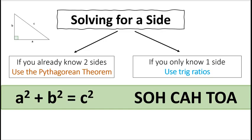Today I will show you how to find the side length of a right triangle. If you already know two sides of the right triangle, then you use the Pythagorean theorem to find the third side, which is a squared plus b squared equals c squared. Now, if you only know one side of a right triangle, then you use trig ratios, which are sine, cosine, and tan.